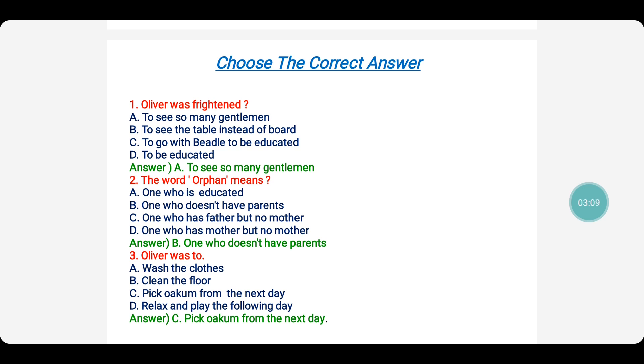So here there might be a confusion for you between C and D but the answer is completely different. The answer is B, who does not have parents, that is either father and mother. We all know father and mother together are called parents. So here we can write, the right answer is one who does not have parents.